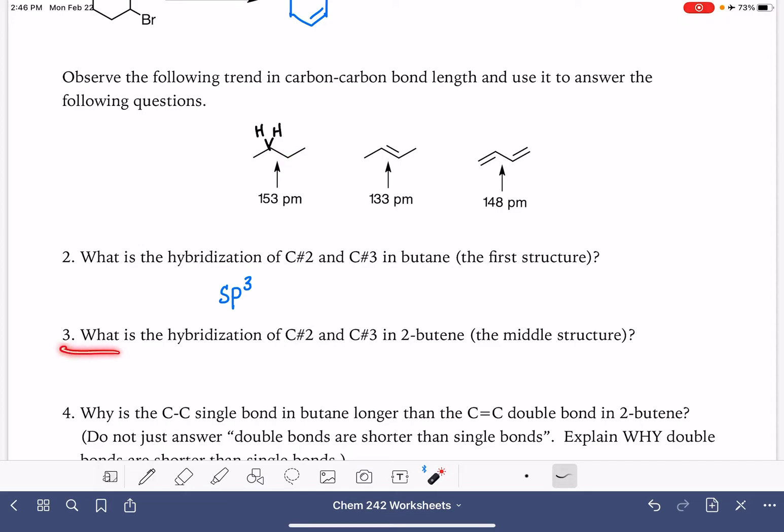Next question is asking the same thing about two butene. That's this molecule right here. We'll go ahead and draw the hydrogen on carbon number two. This particular carbon atom has got three areas of electron density around it, so that makes this one an sp2 hybrid, which we know is the case when we have a double bond.